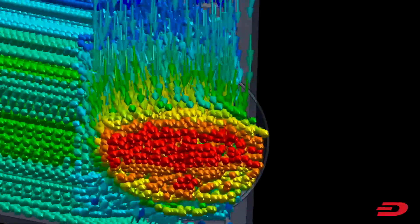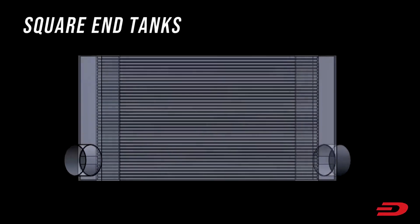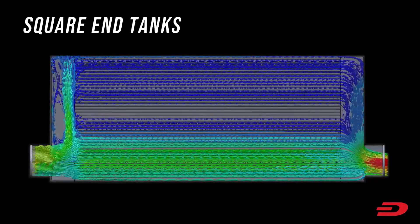In this video, you're going to see CFD simulations for some of the most common intercooler designs. We'll begin with a basic square-end tank design, one of the simplest intercooler designs, the easiest to manufacture, and commonly found in custom applications.